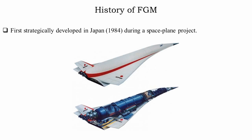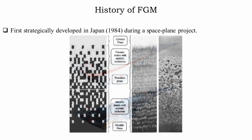To talk about the history of functionally graded material: functionally graded material was first strategically developed in 1984 during a Japanese space plane project. The problem faced by researchers in this project was the delamination failure already discussed. The task was how this interface could be removed so that the composite could survive the intended thermal barrier application required for the space plane project. The researchers were able to systematically eliminate the sharp interface in the traditional composite material by a gradually changing interface, thereby reducing the stress concentration at this interface, and the functionally graded material developed was able to withstand the extreme working conditions without failing.